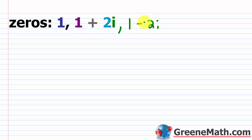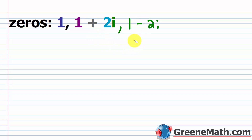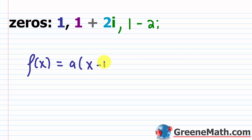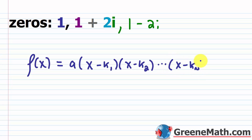The 1 stays the same, the 2i stays the same — just change the sign to get the conjugate. Now to write out the polynomial function, remember the form: f of x equals a times (x minus k₁)(x minus k₂) and so on through (x minus kₙ). In each case, it's x minus whatever the zero is. So for zero 1, I'd write x minus 1.